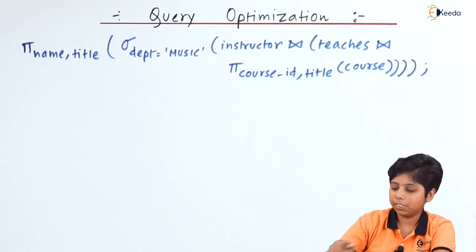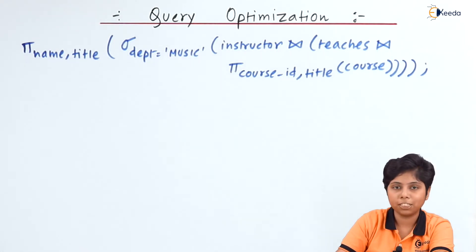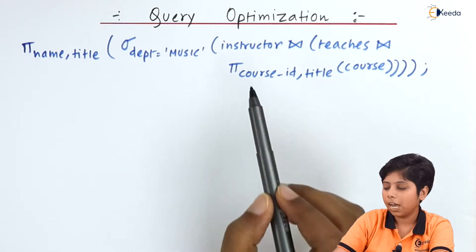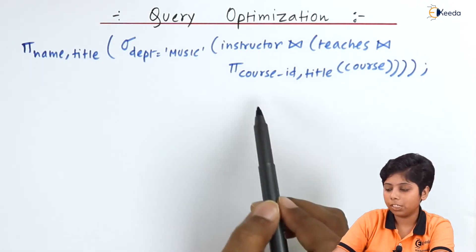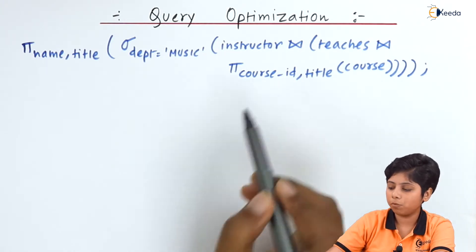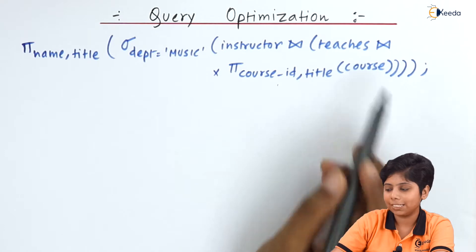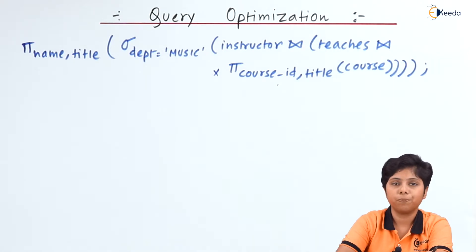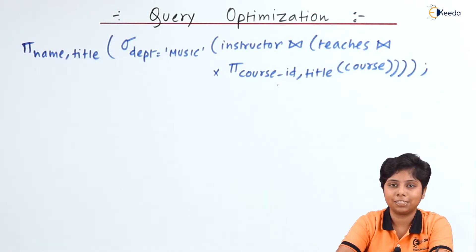Now let's look at this example. This query finds all instructors that teach in the music department along with the course ID and title. This query gives us a relational expression. Now what happens if we remove this projection on course ID and title over the relation course?